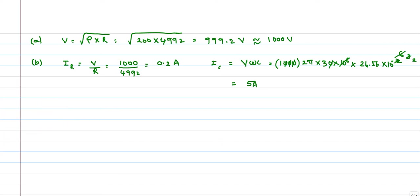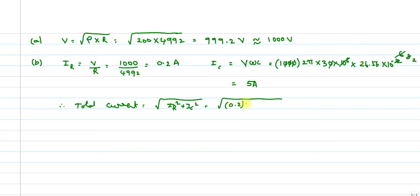The total current is I = √(Iᵣ² + Ic²) = √(0.2² + 5²). Since 0.2 is very small compared to 5, the total current is approximately 5 amperes. This completes part (b).